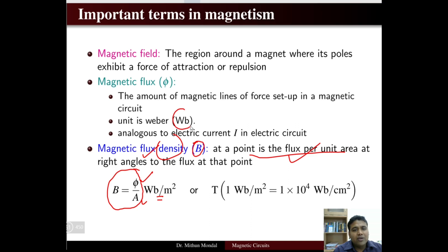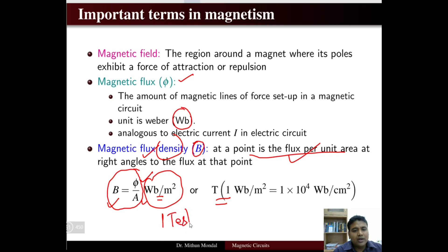The unit Weber is used for flux and Weber per meter square for flux density. Note that 1 Tesla equals 1 Weber per meter square — Tesla is the other unit of flux density.